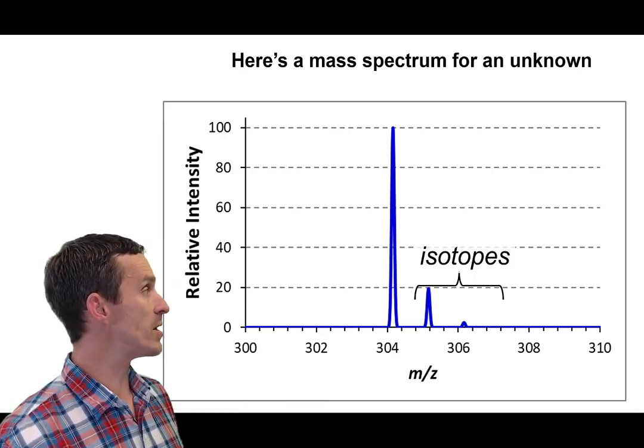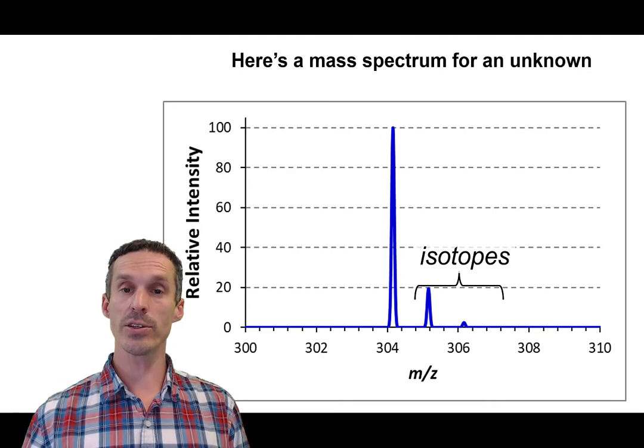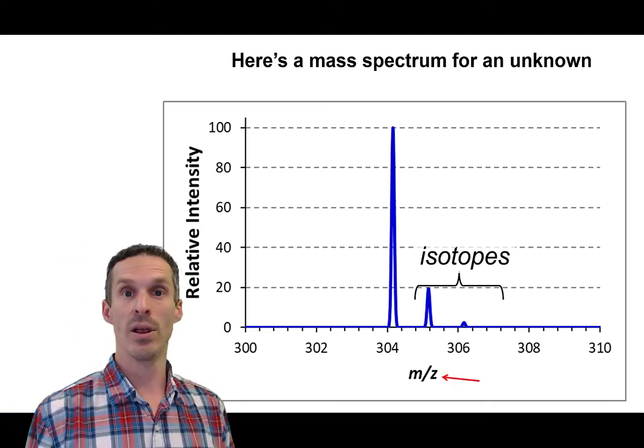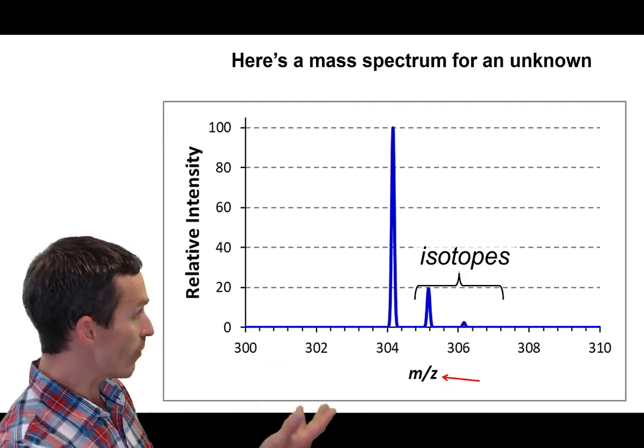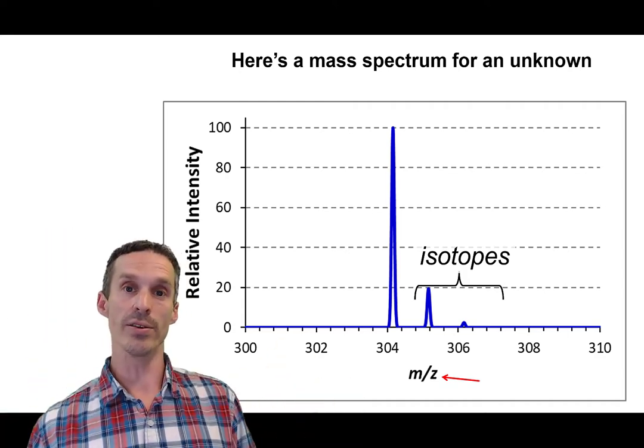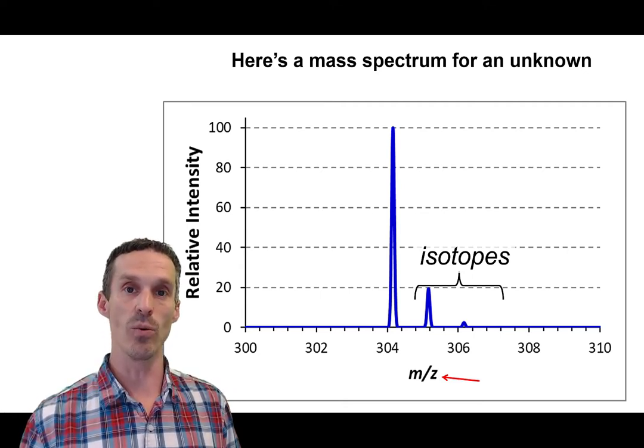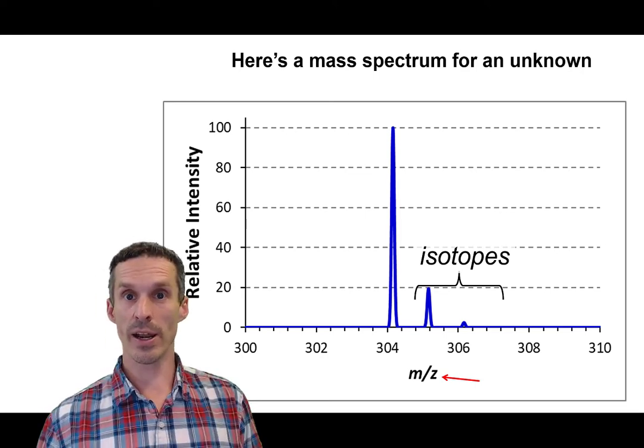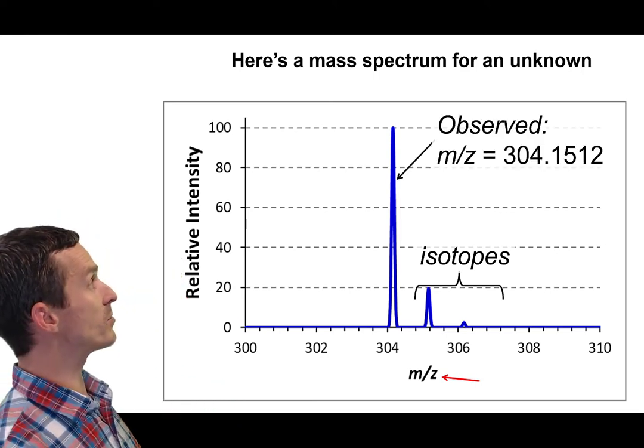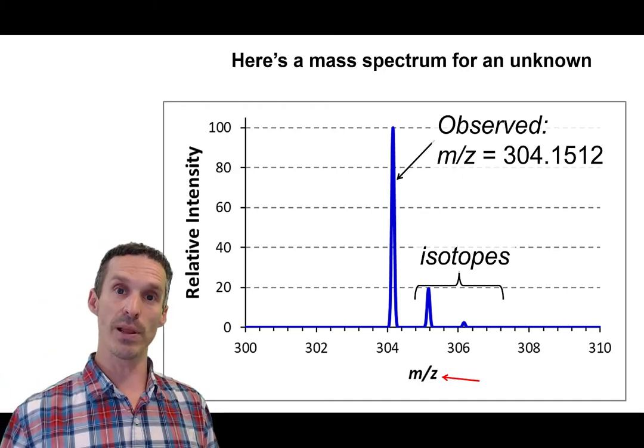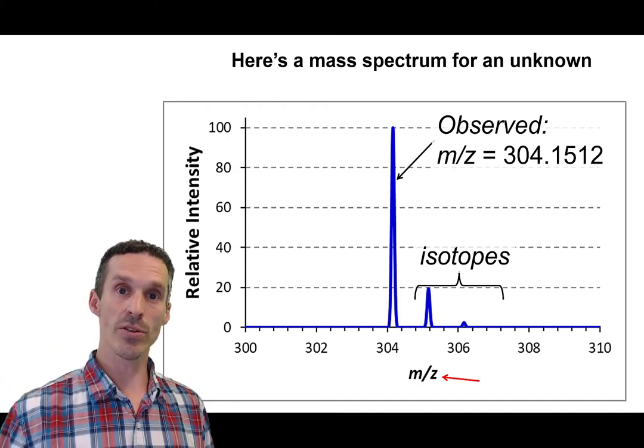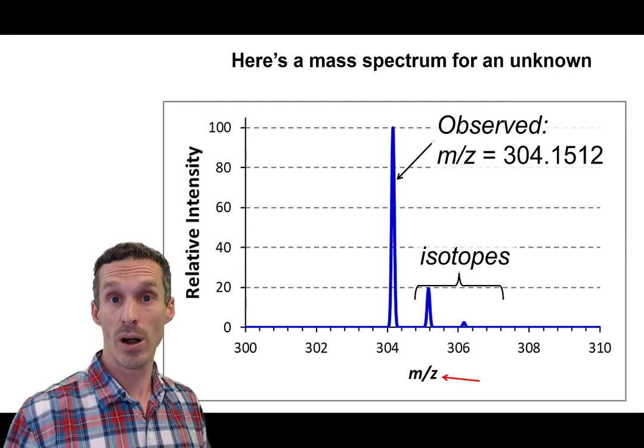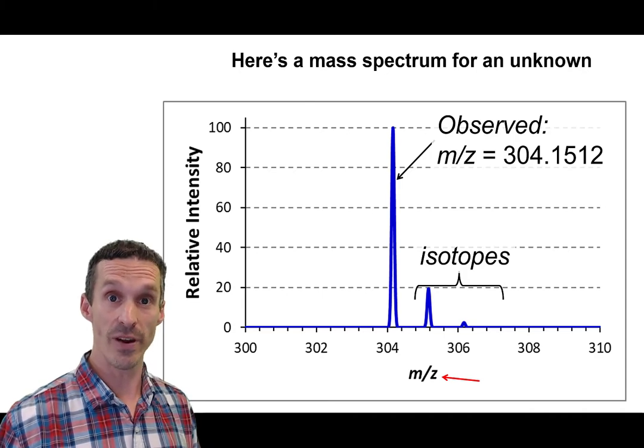So one thing that you can see right away is the isotopes. And the isotopes provide us very clear information, which is the Z in the m/z scale. So you'll notice that the gap between them, 304, 305, 305, the gap is 1. So that means that the charge state of this molecule has to be 1. So that's important information to put in our back pocket right away. And as far as the mass, well it's not just 304, we do have all these other decimal places to work with as well. So the mass that we can report here is actually 304.1512. All those extra digits are going to be very useful to us.